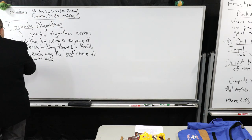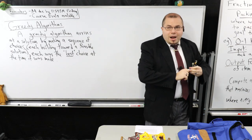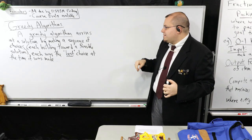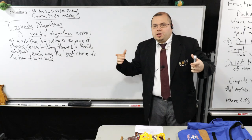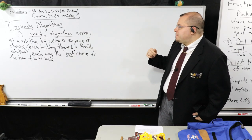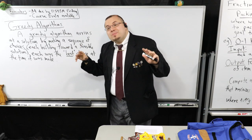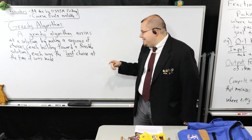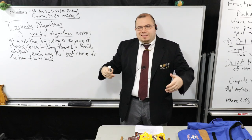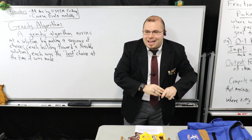So what's a greedy algorithm? A greedy algorithm arrives at a solution by making a sequence of choices. Each one of these choices is going to work you towards building a feasible solution for an optimization problem. But each one of these choices was simply the best choice - there may be multiple criteria for what that means - at the time it was made. You might say that sounds really simple, and indeed that's what it is. It's a very simple idea.